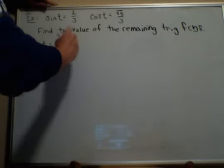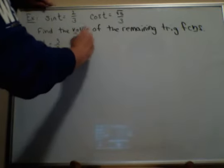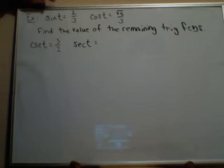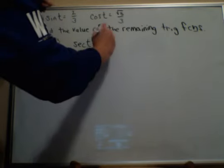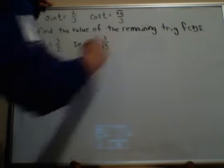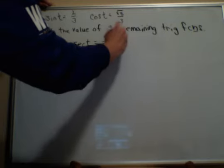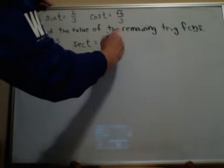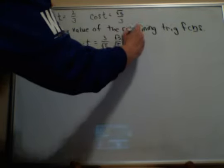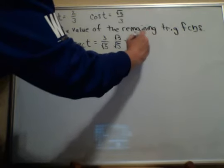I could then, knowing cosine, I could find secant, right? Because we know that the secant is the reciprocal of cosine. Well, if I turn this over, interesting things happen. I get a radical on the bottom, which I don't like. So I have to rationalize that to get three square roots of five over five.